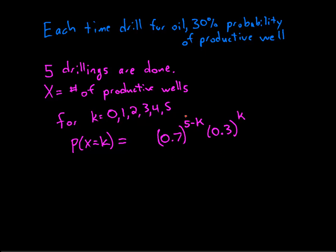I'm assuming that the outcomes of all these drillings are independent so I can just multiply together these probabilities. And then if say k were 2 then there's several different ways that we could get two productive wells. We could have the first two drillings result in productive wells, or maybe it's the last two, or maybe it's the first one and the fourth one.